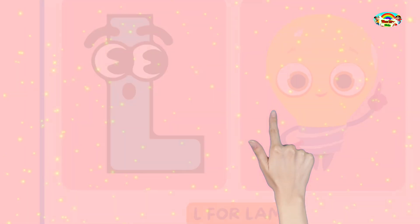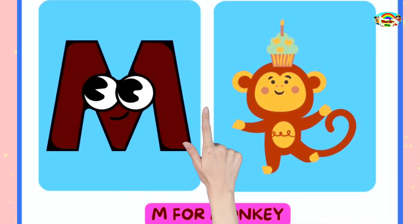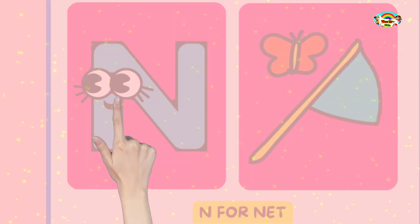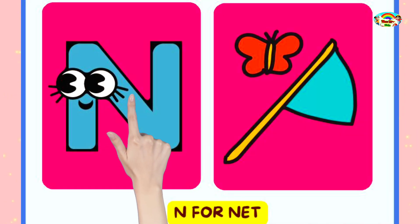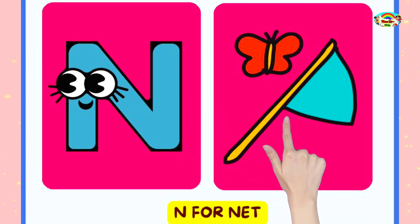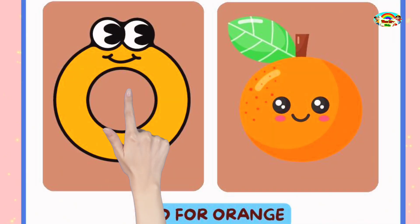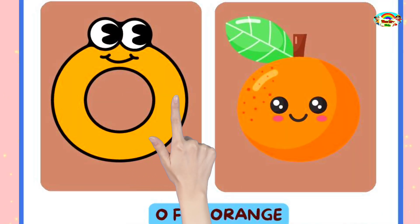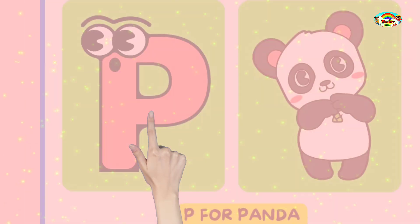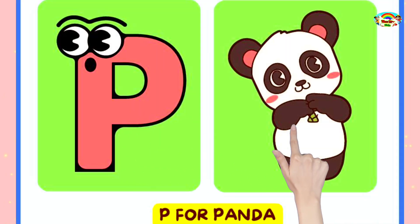M for monkey, N for net, O for orange, P for panda.